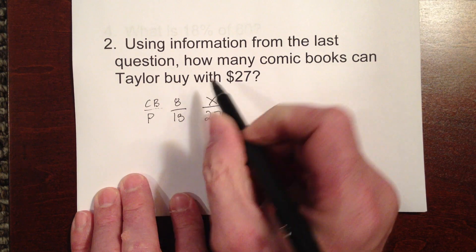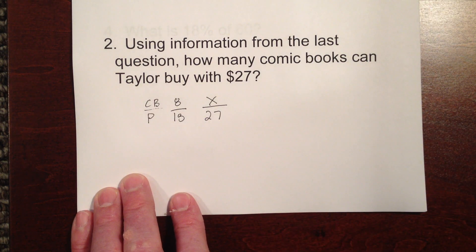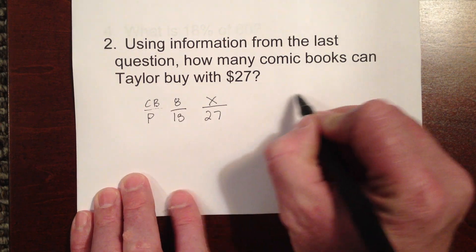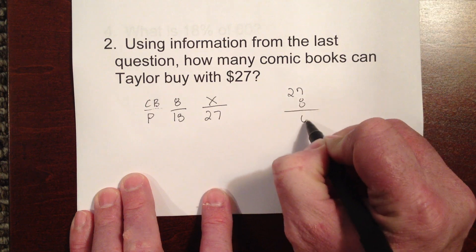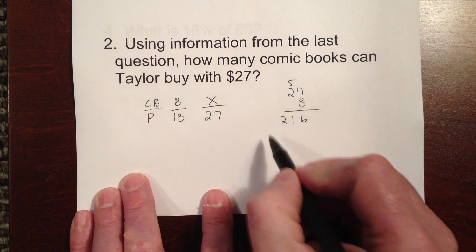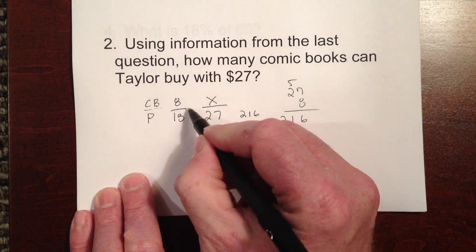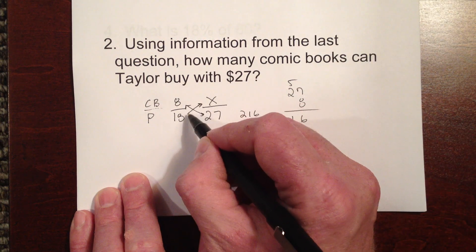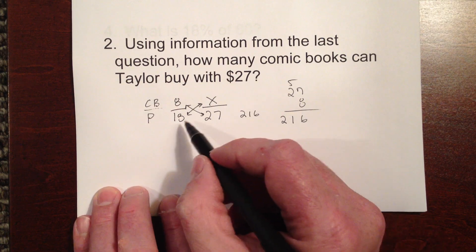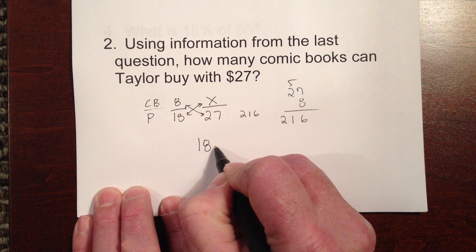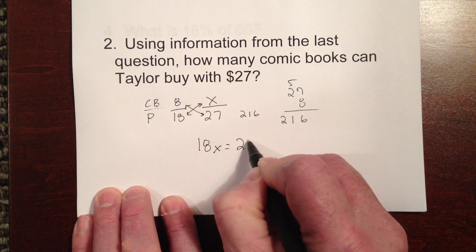And then we would have 8 over 18. And the price here is going to be $27. But we don't know how many comic books we can buy. That's what the question is asking us. And, of course, we would cross-multiply here and say 8 times 27, or 27 times 8, 216. Well, if this times this is 216, in order for this to be proportional, this times this has to be 216. And we would say this algebraically, 18x equals 216.